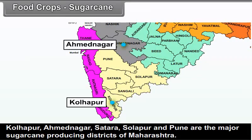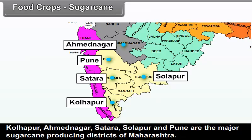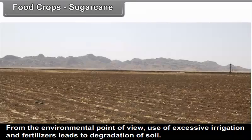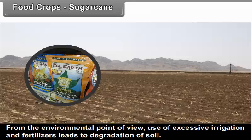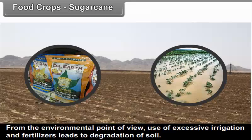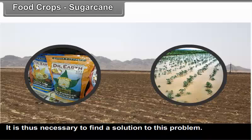Kolhapur, Ahmadnagar, Satara, Solapur, and Pune are the major sugarcane-producing districts of Maharashtra. From the environmental point of view, the use of excessive irrigation and fertilizers leads to degradation of soil, and it is necessary to find a solution to this problem.